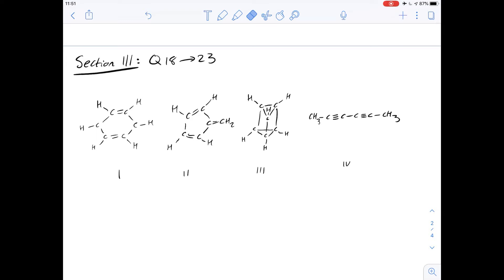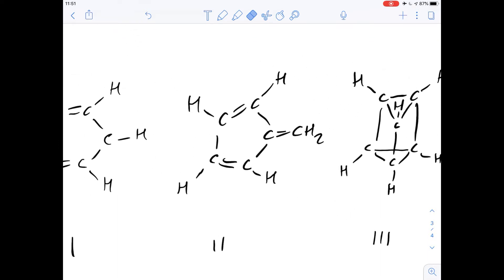Question 18 says consider structures 2 and 3. How many different monosubstituted isomers can be produced from them? Let's look at structure 2 first.